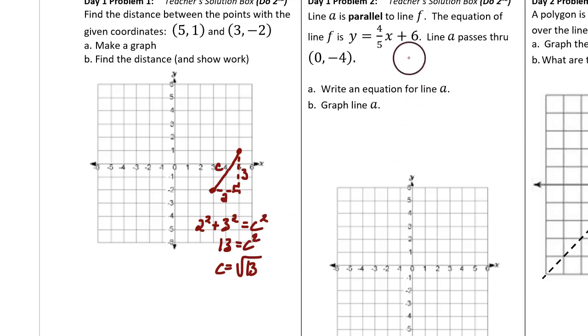Day one problem two. Line a is parallel to line f. Here is the slope of line f and so this is also the slope of line a. Line a passes through 0, negative 4.